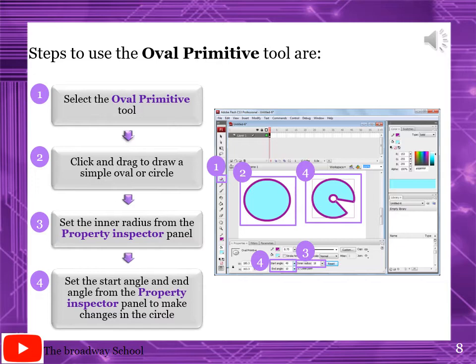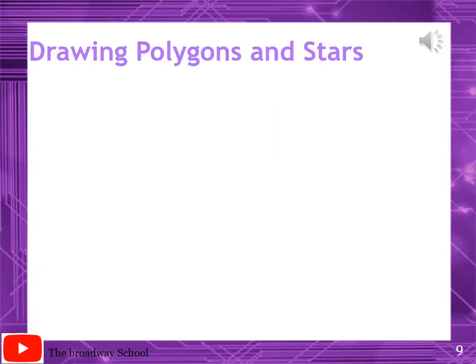In the oval tool case, you have to decide earlier - what will be the inner angle, the starting angle, the ending angle, and the inner radius. But in the primitive case, you can change these settings during the whole movie as well.